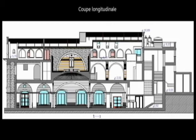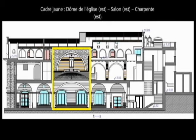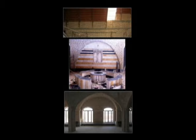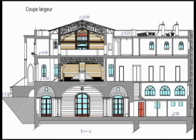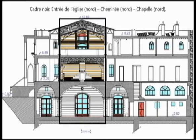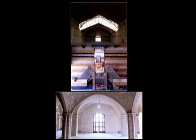Dans ce plan, le bâtiment est, dirait-on, découpé dans la longueur. En regardant bien, nous pouvons déceler les trois étages — et ici aussi, nous pouvons déceler les trois étages.